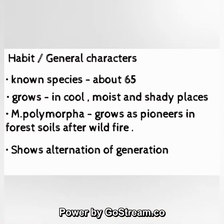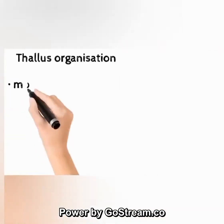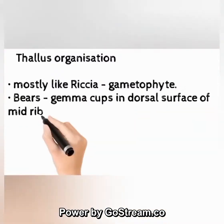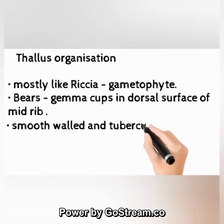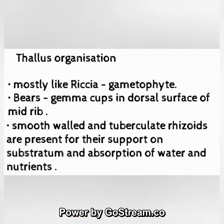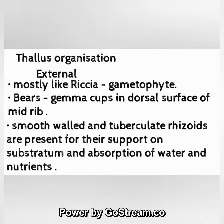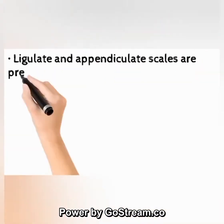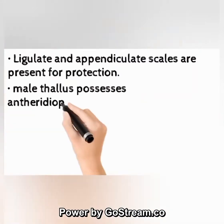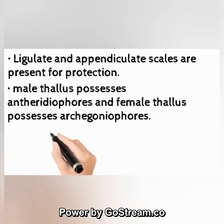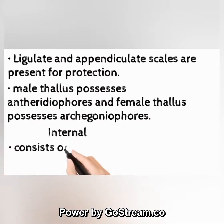Thallus organization — external: mostly like Riccia. The gametophyte bears gemma cups on the dorsal surface of the midrib. Smooth-walled and tuberculate rhizoids are present for support and absorption of water and nutrients. Ligulate and appendiculate scales are present for protection. Male thallus possesses antheridiophores and female thallus possesses archegoniophores.